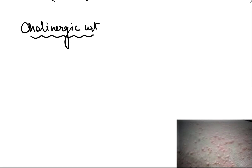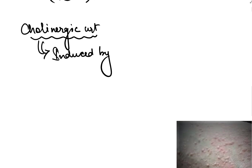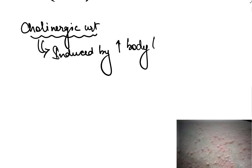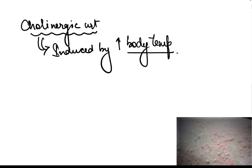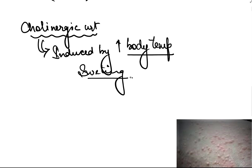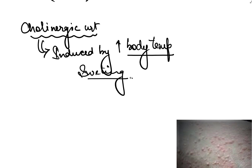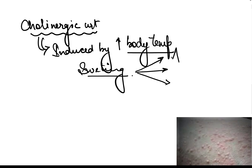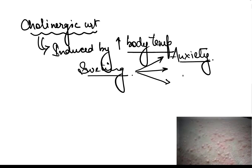Cholinergic urticaria is induced by increased body temperature, and many times this increased body temperature leads to sweating. Sweating caused by increased body temperature is what triggers this urticaria. This can be associated with anxiety, where perspiration occurs after anxiety.